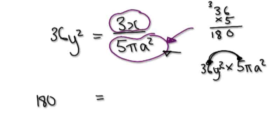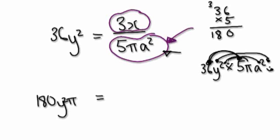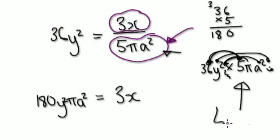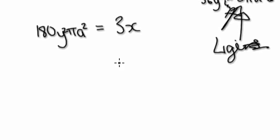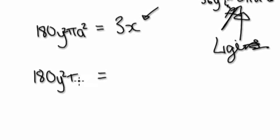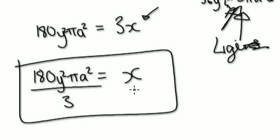The number times this number here would be 180. y squared times y — well, there's no y on this side, so it's just going to be y squared. Pi over here, so it's just going to be pi. And a squared — there's no a over here, so it's just going to be a squared. And then on this side it would be 3x. Now we want to get x on its own, so divide both sides by 3. Take the whole thing — 180 y squared pi a squared — and divide the whole thing by 3. Here you've got x all on its own. So you've just made x the subject.